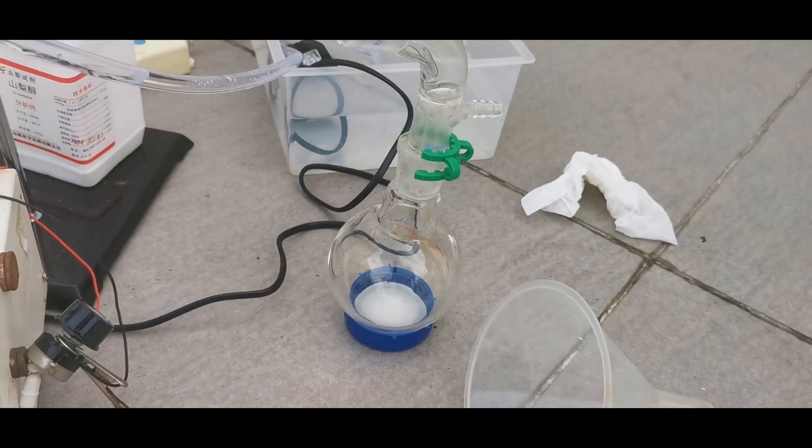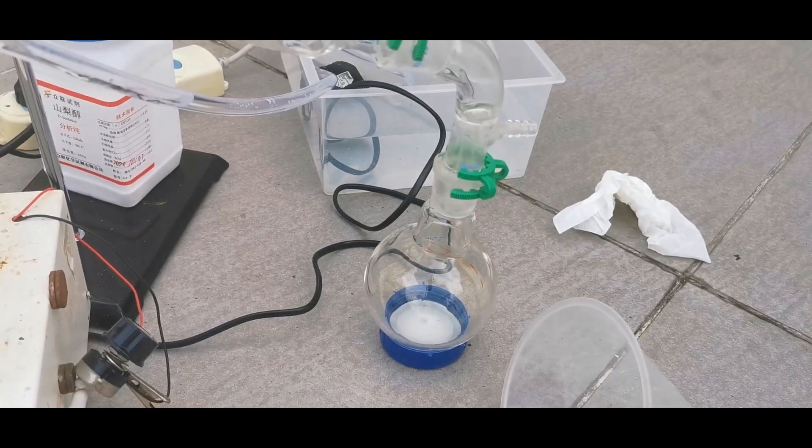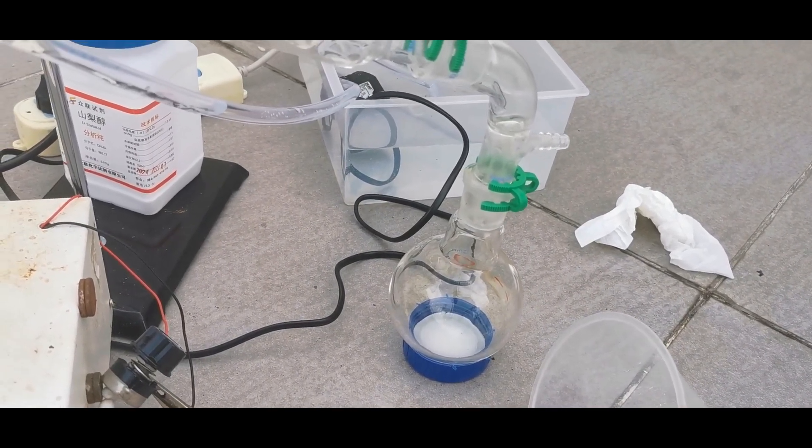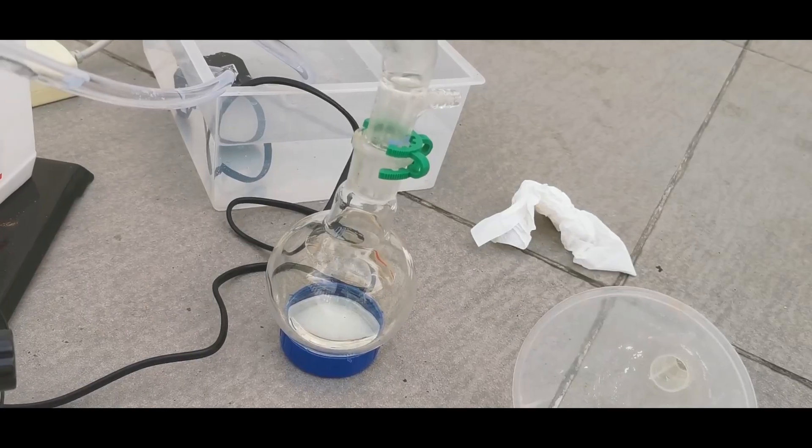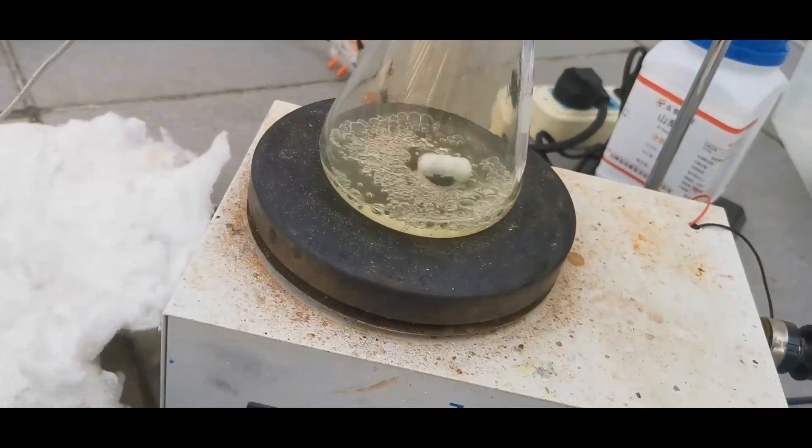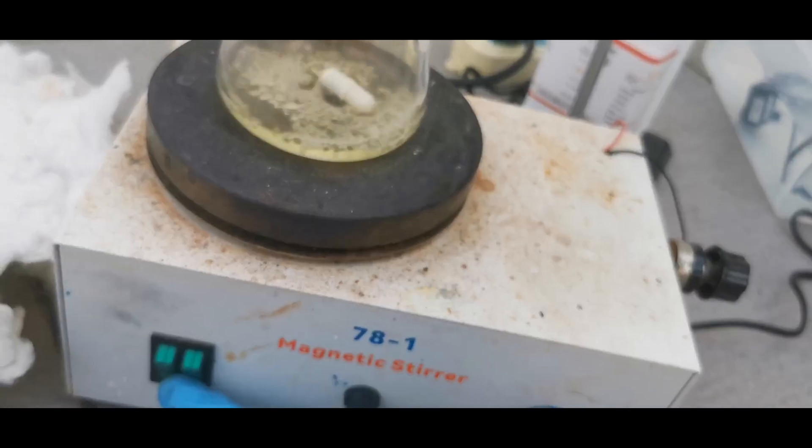The mixture boiled, and the vapor front slowly rises up in the adapter. A colorless liquid distilled over shortly after, which should be mostly water and hydrochloric acid. After around half an hour, the distillation slowed down to a crawl, indicating that low boiling components had been removed and we're left with perchloric acid.